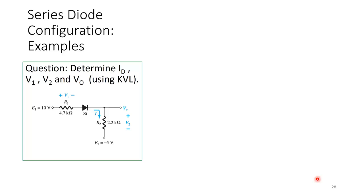Next example: 4.7 kilohms in series with a silicon diode, connected to 2.2 kilohms, with one end at a 10-volt source and the other at a negative 5-volt source. There is also a node labeled Vout in this circuit.